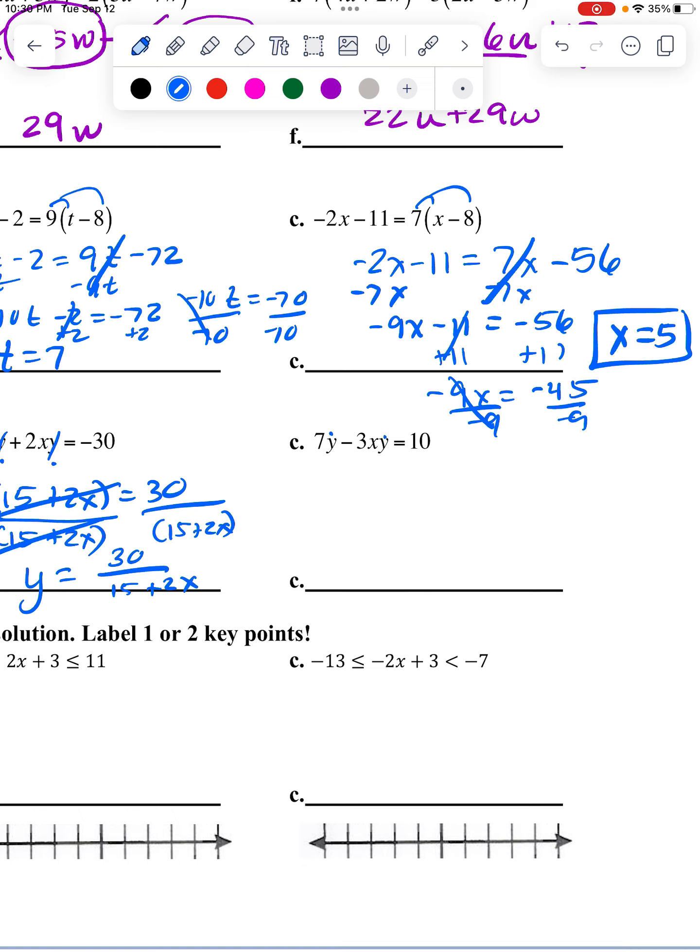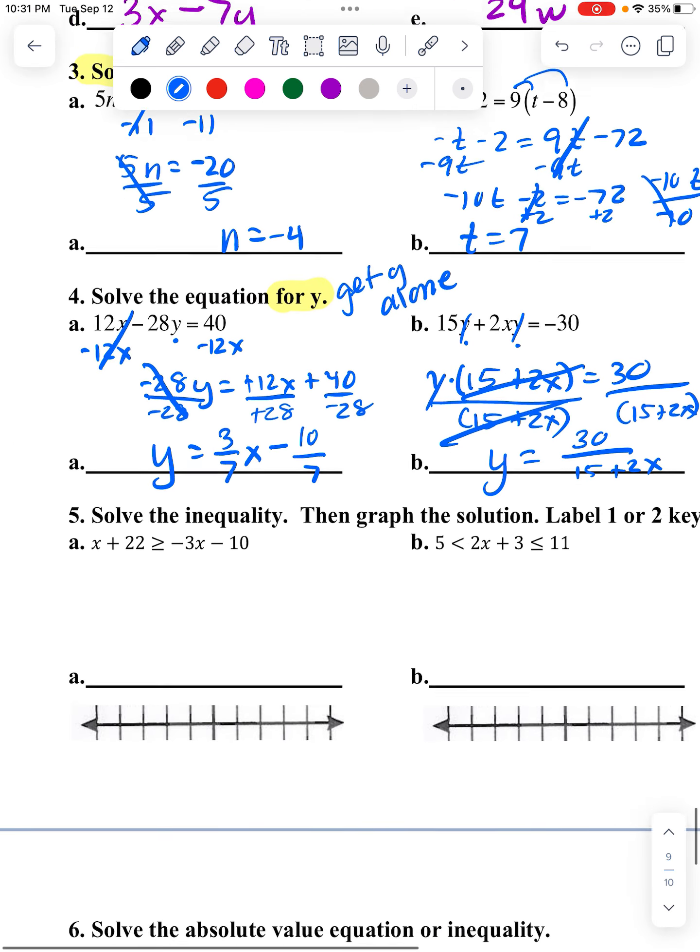So this also has Y spread out. So take it out front. So that leaves me with 7 minus 3X. That's multiplied to the Y. So I'm going to divide that out to both sides. Here, it cancels. On this side, nothing can happen. So I get 10 over 7 minus 3X as my final incorrect answer.